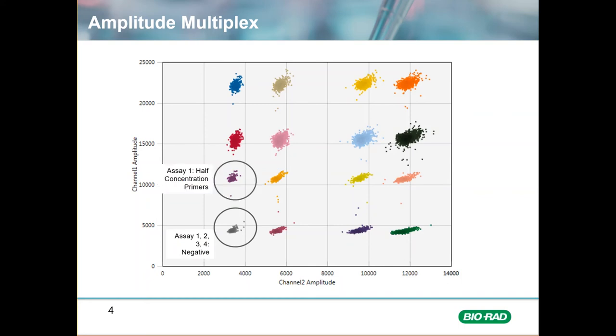Just above this cluster on the FAM channel or channel 1 axis, the first cluster shows where the positives sit for assay 1. This assay was added at half the primer concentration.